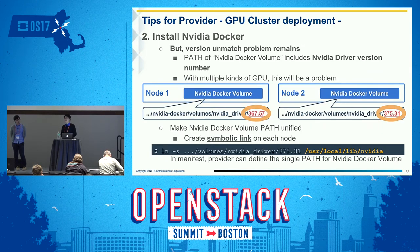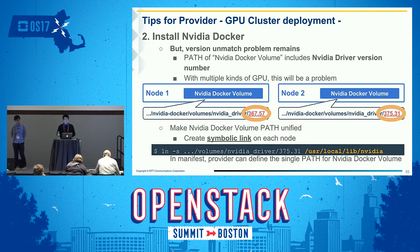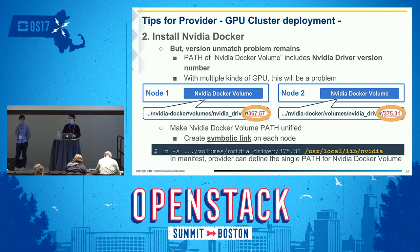There is still one versioning problem: the path of the NVIDIA Docker Volume includes the NVIDIA driver version number, meaning two nodes with different driver versions have different paths. This is particularly a problem when your cluster includes multiple kinds of GPUs. One solution is to unify the path name by creating a symbolic link on each slave node, so you can use the same path for the NVIDIA Docker Volume in the manifest file.